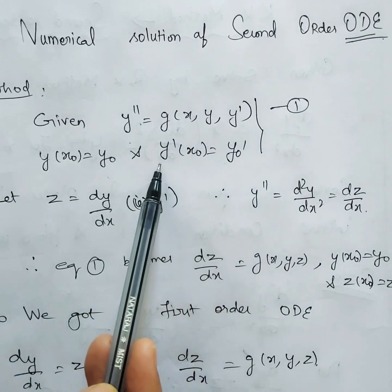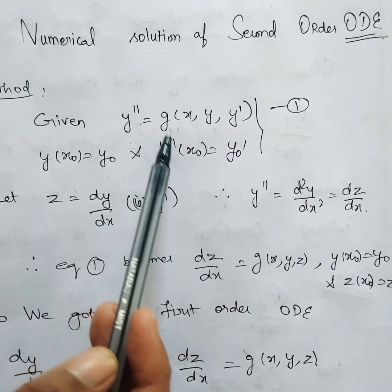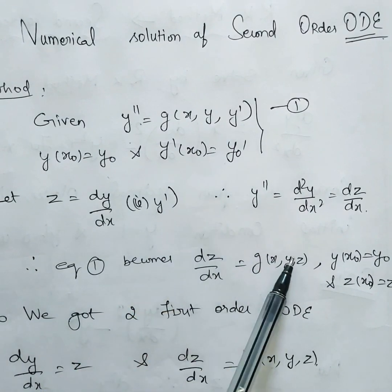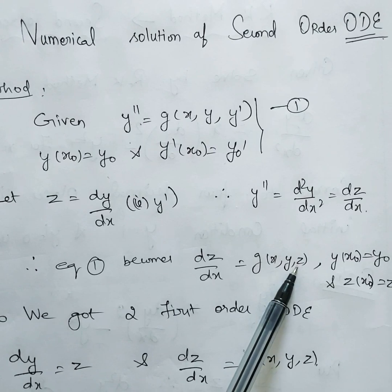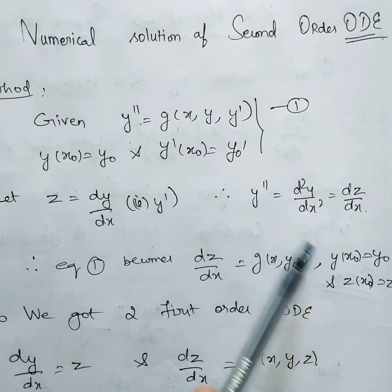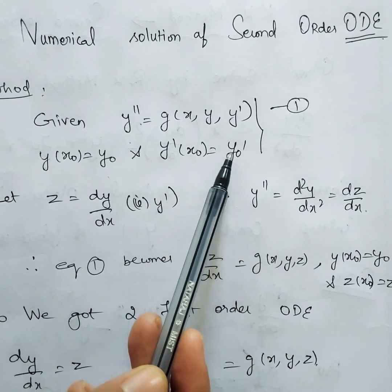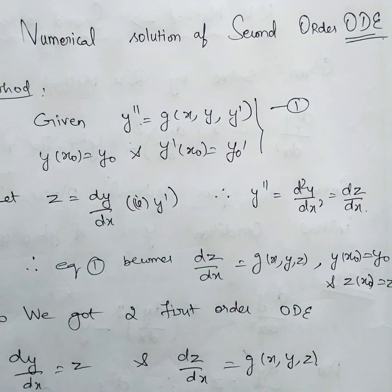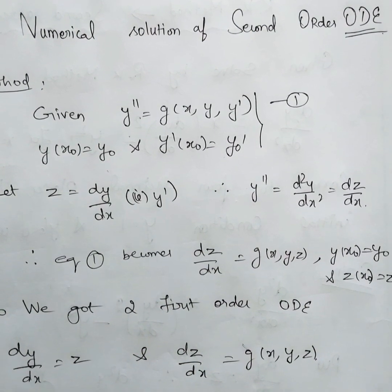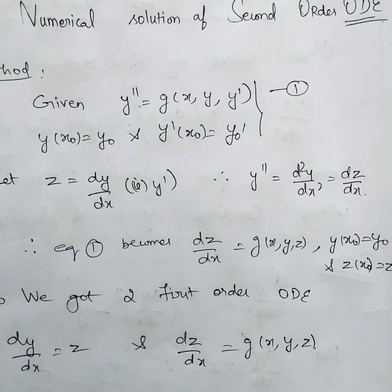Therefore, the given equation becomes: in place of y double dash, substitute dz/dx, which equals g of x, y, z — replacing y dash with z. The function is now in terms of x, y, and z. The initial condition y(x-naught) equals y-naught stays the same. Since y dash is z, we write z(x-naught) equals z-naught. We now have two first order differential equations: dy/dx equals z, and dz/dx equals g of x, y, z.